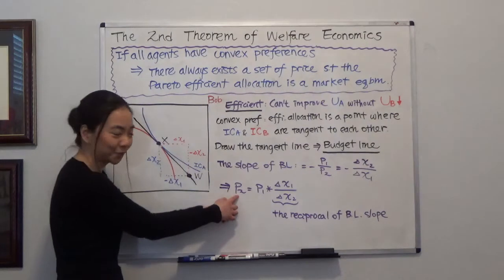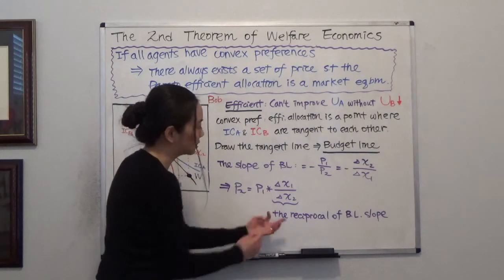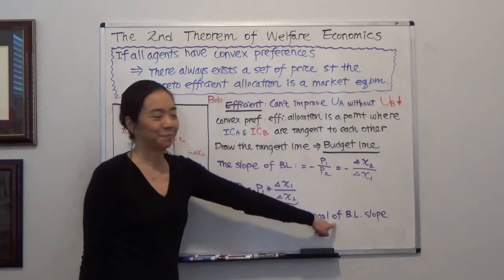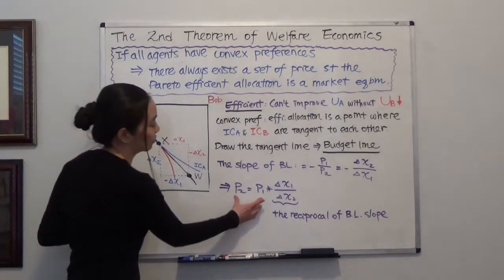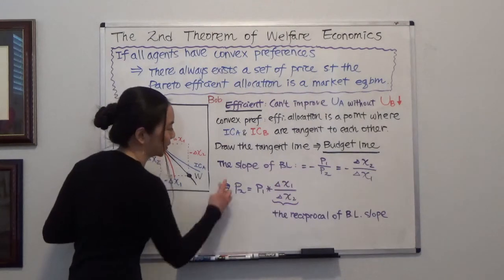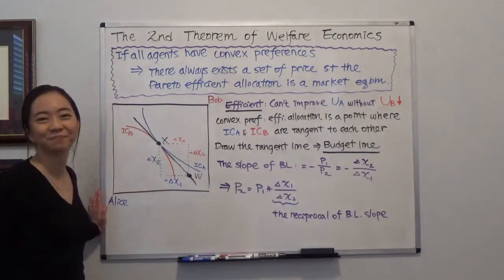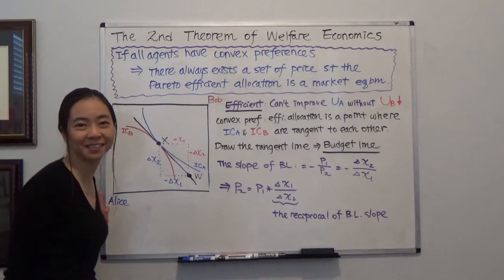So you can see after you manipulate this algebraically, you will see that p2 is equal to p1 times the reciprocal of your budget line slope. So any set of prices that satisfies this equation is going to clear our market. So I hope this helps and I'll see you next time.